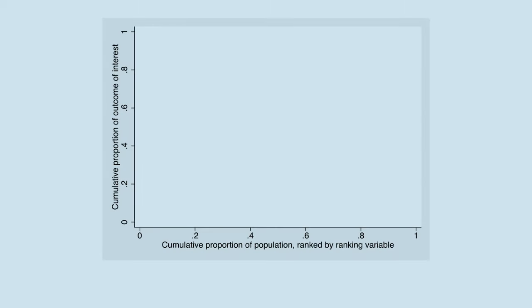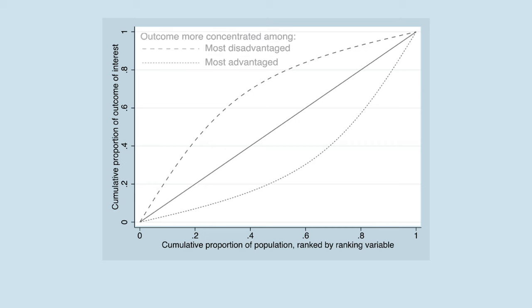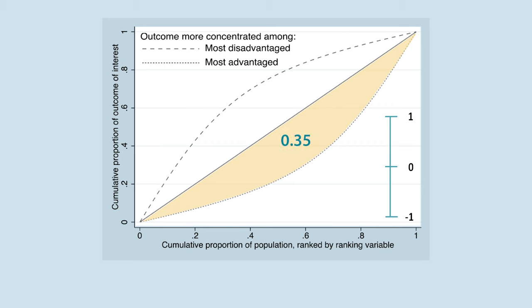The concentration index takes the value of twice the area between the curve and the equality line and is bounded between minus 1 and 1. In this example, the value of the CIX is 0.35. Positive values indicate the inequality favours the most advantaged groups, or the richest, while negative values indicate the inequality favours the most disadvantaged groups, or the poorest. Zero means absence of inequalities.